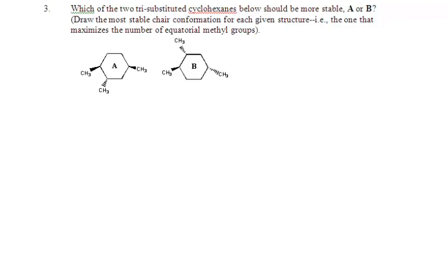In question three on this worksheet, we can't name these as cis or trans because we have three substituents, not just two. So we'll just call them molecules A and B.